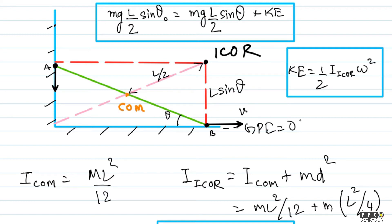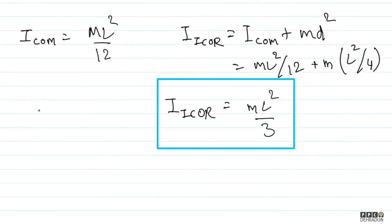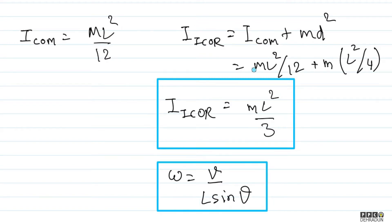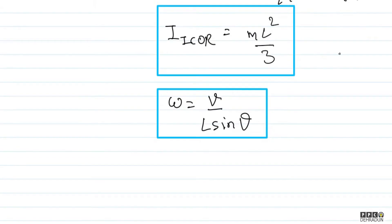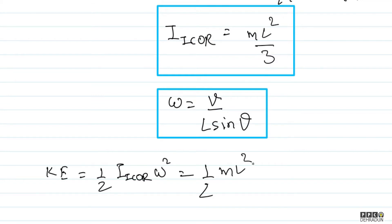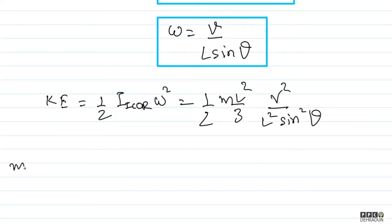Now, how do we find ω? Since ω = V_perpendicular / R, and here V_perpendicular is V (the speed of point B) and R = L·sinθ, we get ω = V/(L·sinθ). So the kinetic energy becomes: KE = ½·(ML²/3)·(V²/L²sin²θ) = MV²/(6sin²θ).